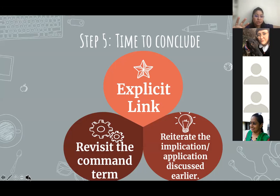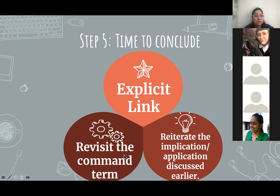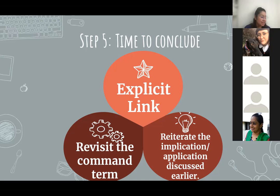With that, we come to the last step — conclusion becomes very important. Have students do an explicit link to the question: how through these particular studies the question has been answered. Revisit the command term: how the requirements of the command term have been fulfilled. Reiterate the implication or application once again if need be. When you reiterate the implication and application, will it have an opinion? It will — when you talk about the application basis of something, the student's opinion will inevitably be attached to it in one or two lines. That's where the student's judgment comes in.